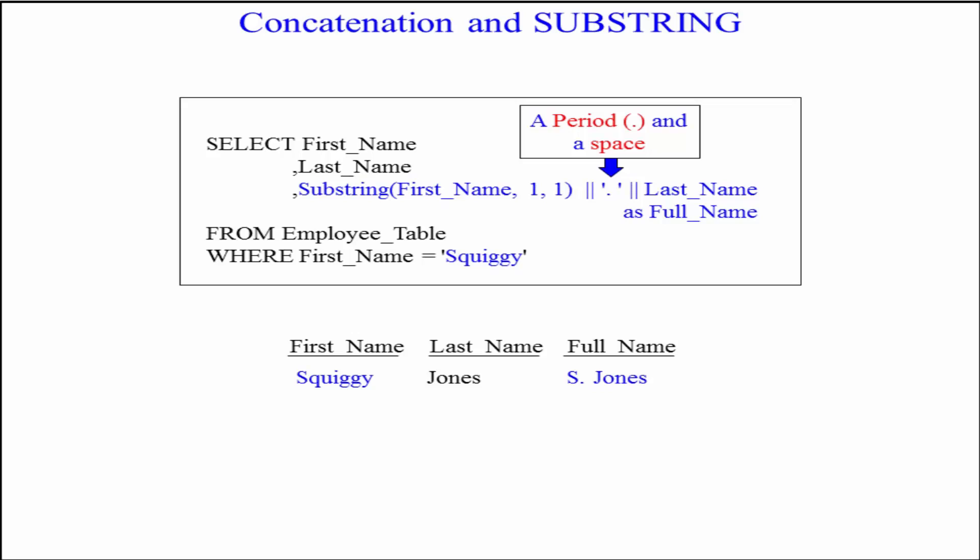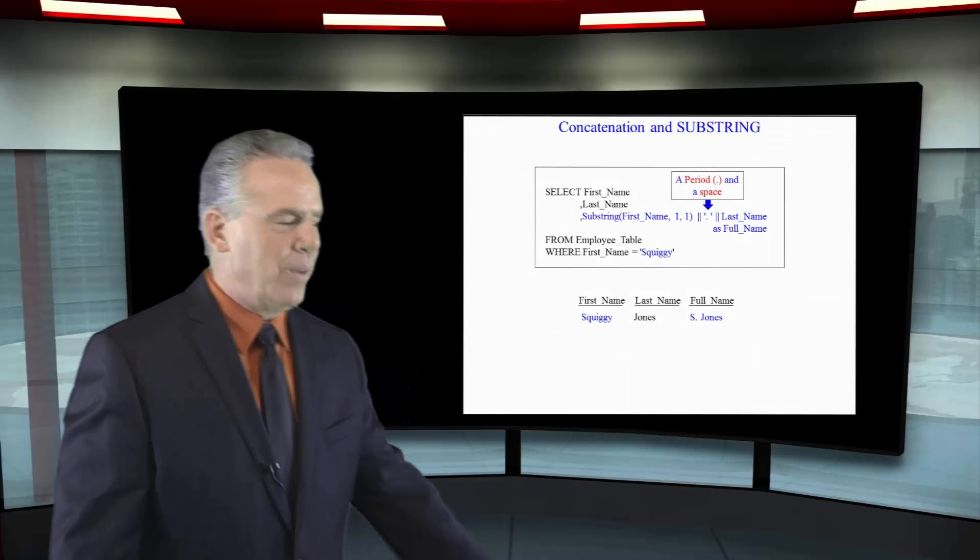I want to see Squiggy, the first name, Jones the last name, and then I want to see the first initial followed by a period of their first name and then a space and their last name. Look how we do it.